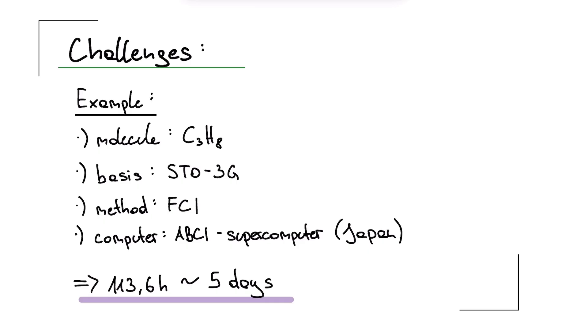That means every possible electron configuration of this molecule is taken into account. The computer they used was the ABCI supercomputer in Japan. It is not the best supercomputer in the world, but it is still a very powerful one. And what they found is that it took 113.6 hours, which is almost 5 full days, to carry out this calculation for propane.